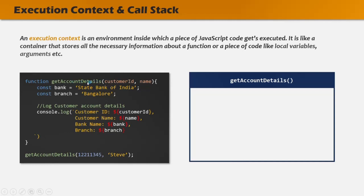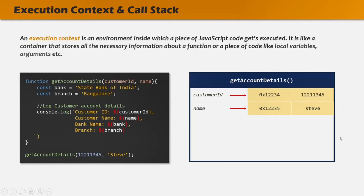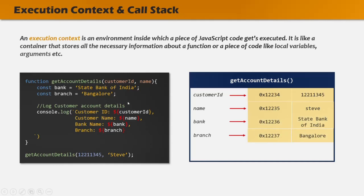For this getAccountDetails function, when the execution context has been created, it is going to store information like the parameter values. The values we are passing for customer ID and name will be stored in this execution context. The variables bank and branch declared inside the function will also get stored in this piece of memory. And then the code of this function will also get executed in this execution context. In this way, for each function, an execution context gets created and it gets executed in the call stack.